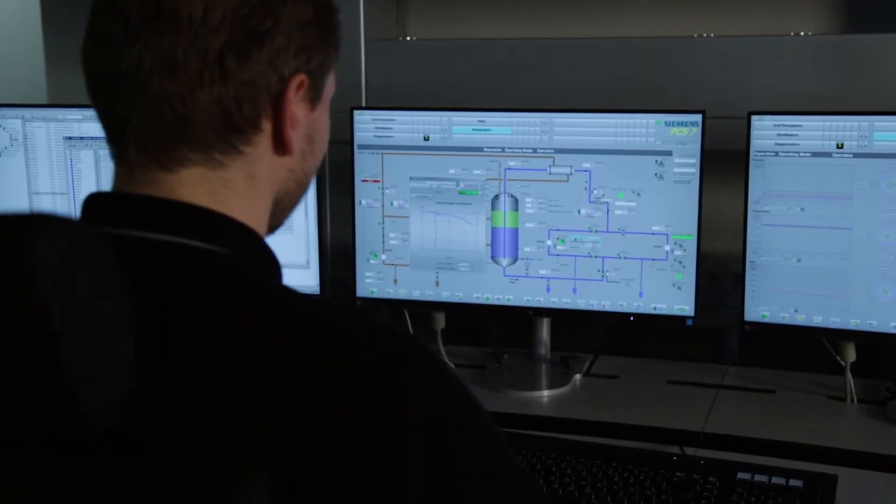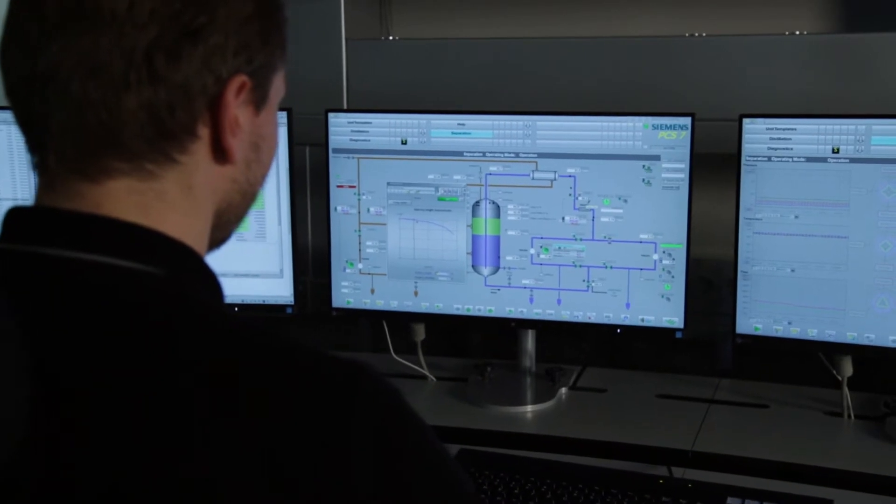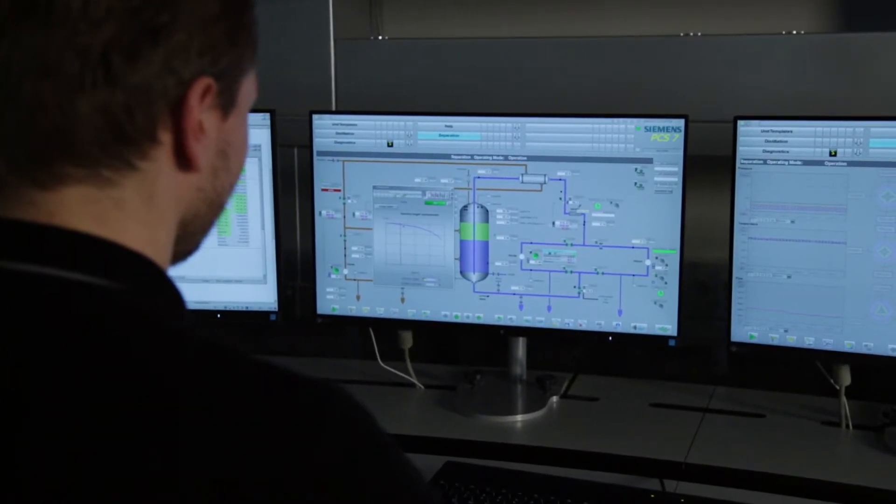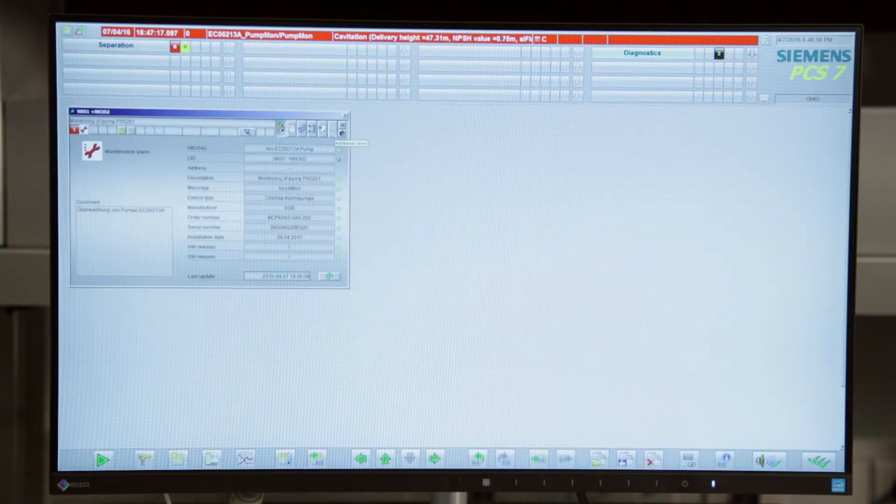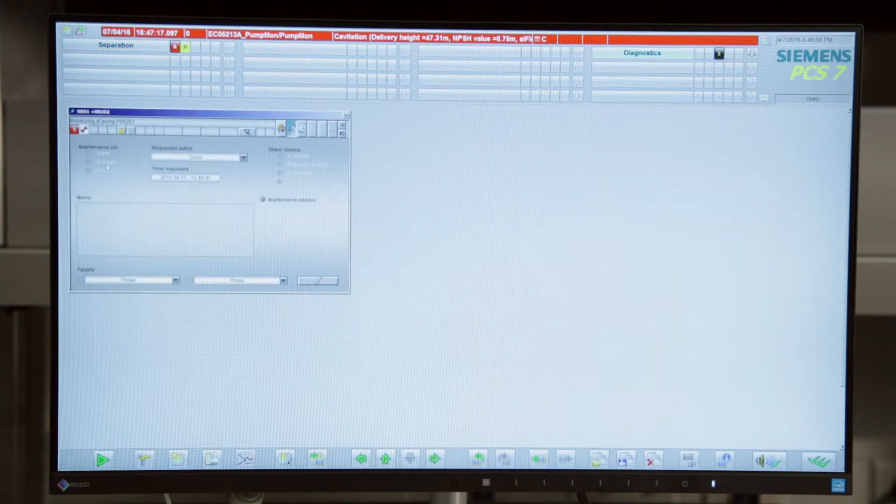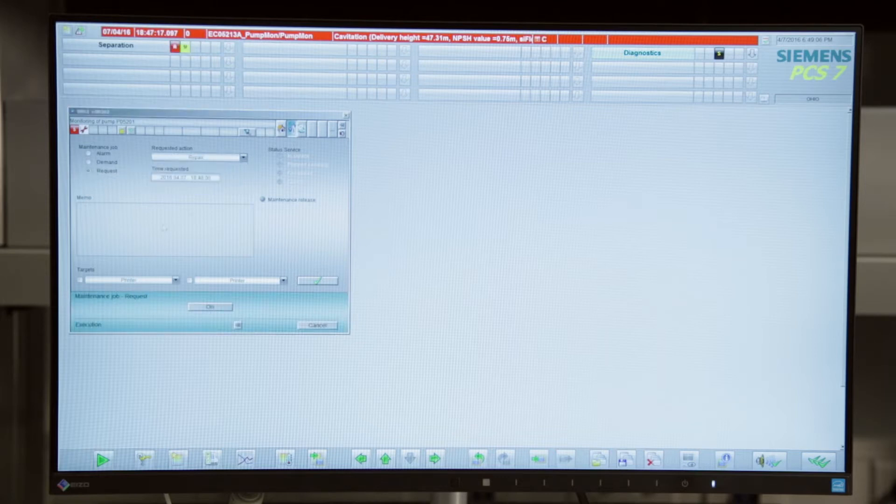Thanks to the continuous monitoring in the SIMATIC PCS7 process control system, an NPSH value below the curve will be registered and reported after a certain period of time. This minimizes the risk of pump failure if serviced in a timely manner.